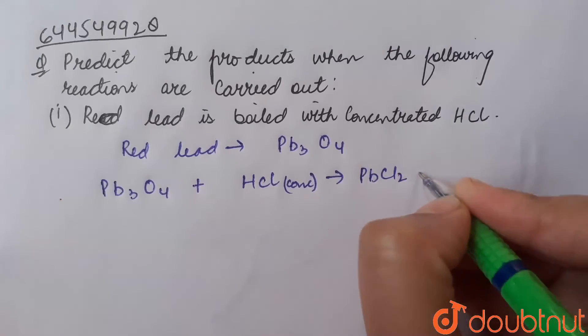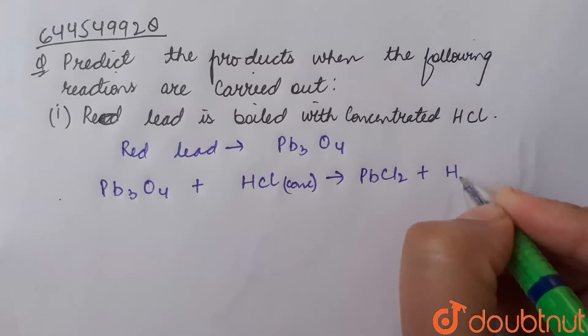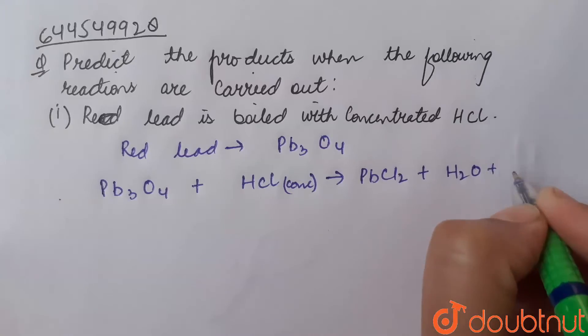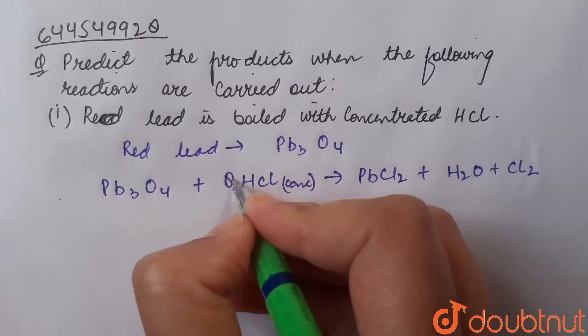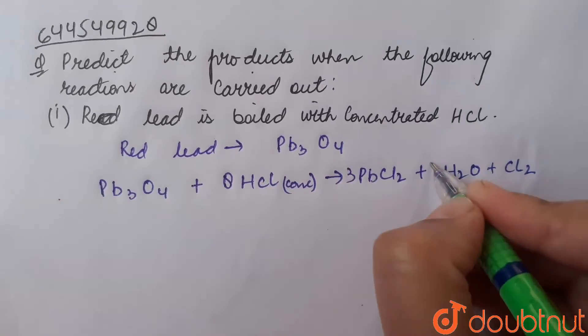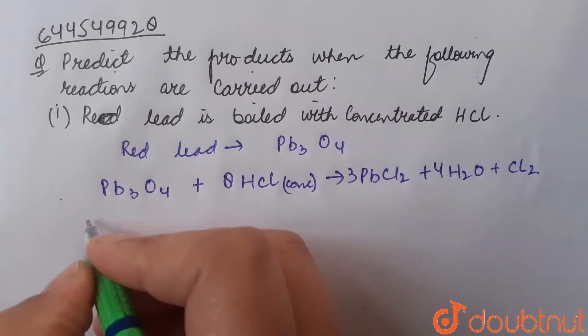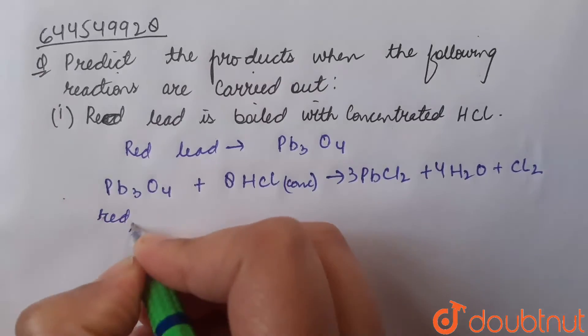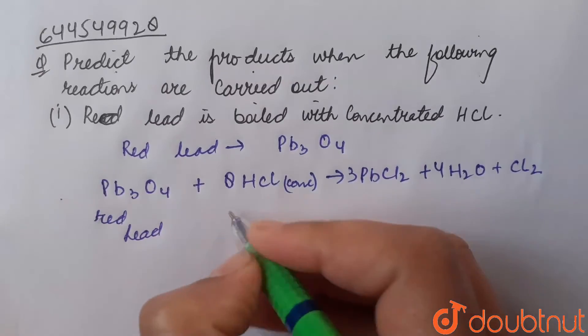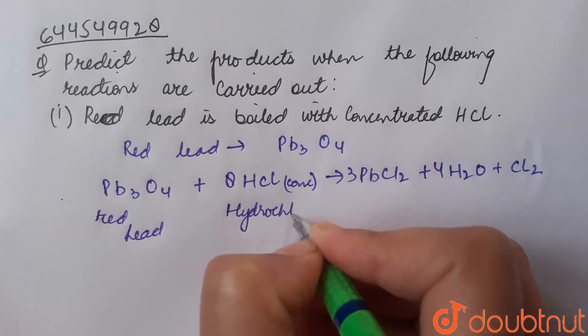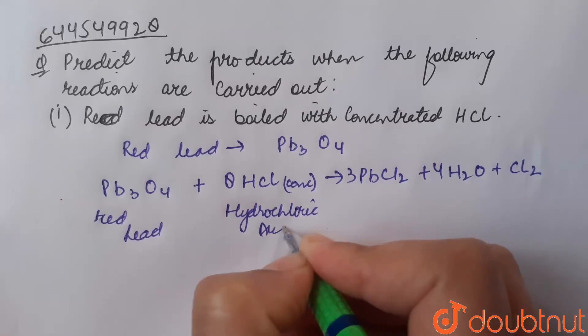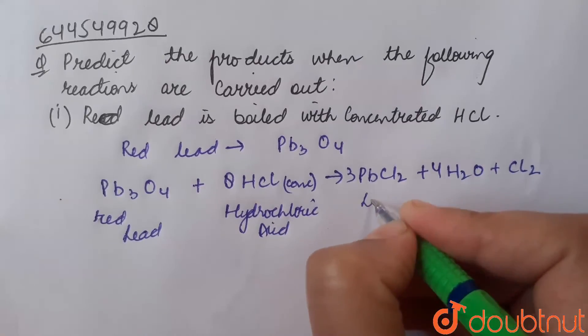PbCl2 along with water H2O and chlorine gas Cl2. Balancing the reaction Pb3O4. When red lead is boiled with concentrated hydrochloric acid, it gives lead chloride.